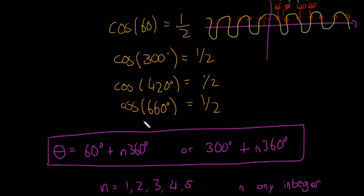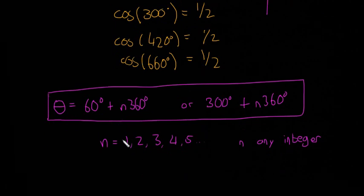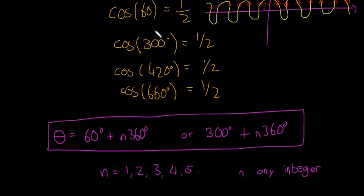If you sub any number into n - so if it's zero, theta equals 60 or 300. If you sub one into n on this side, you get 300 plus 360, which is 660. And if we want to keep going, you can sub 2 into n here.